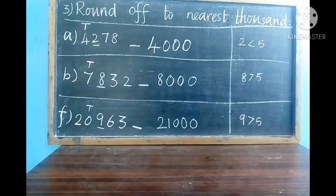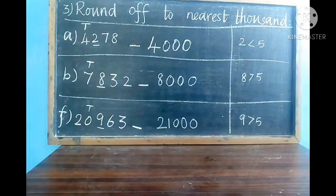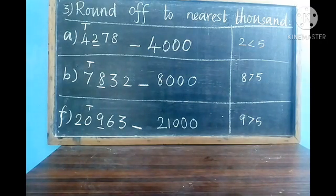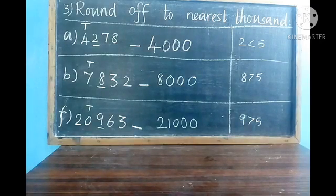In the thousands place, 0 is there. The next thousand is 1000. In the ten-thousands place, 2 is there — write 2 as it is. The next number of 0 is 1, so write 1 in the thousands place, and the remaining three digits should all be 0.